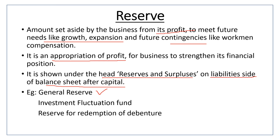General reserve is a general-purpose reserve. Investment fluctuation fund is created to manage gains and losses from investments. Reserve for redemption of debentures is created when a business issues debentures. These are all examples of reserves.